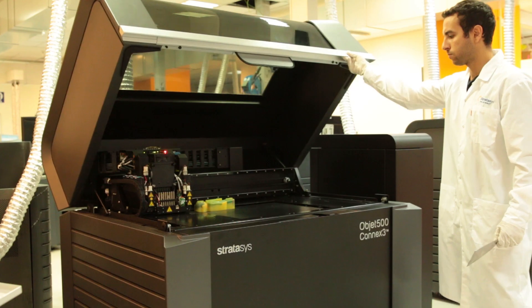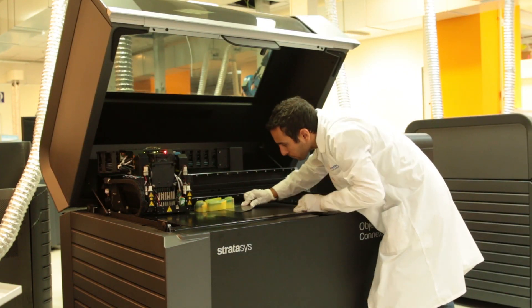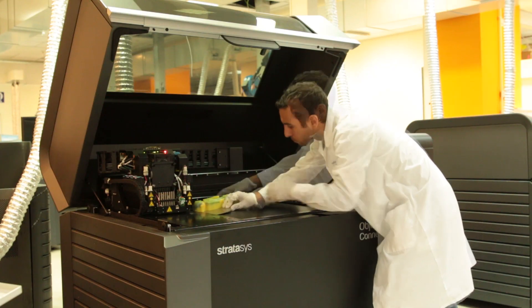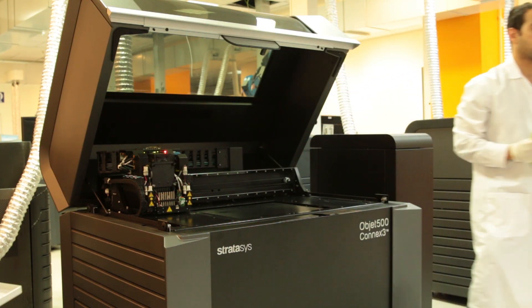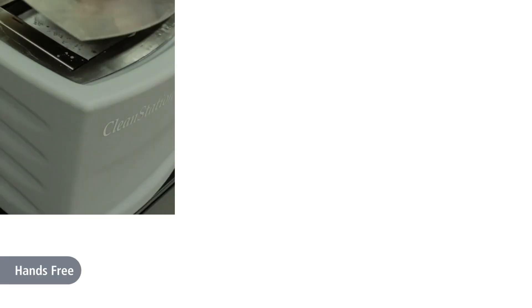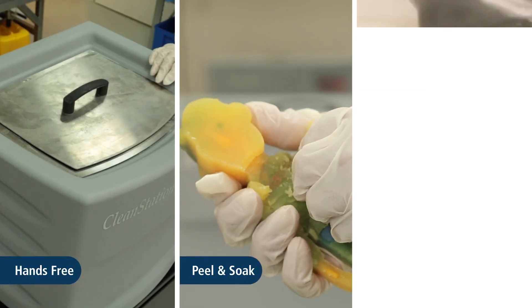Once the parts have been printed using SUP706B support material, remove them from the tray. SUP706B is unique in that it can be removed with three different methods: hands-free, peel and soak, and water jet.